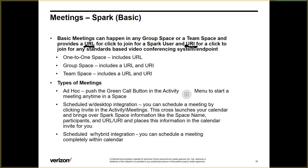So meetings can happen inside these spaces: a one-to-one space includes a URL; a group space includes a URL and a URI; and a team space includes a URL and a URI. URL means cross-launching the Spark client into a meeting. URI means a video conferencing unit dialing into that particular meeting.